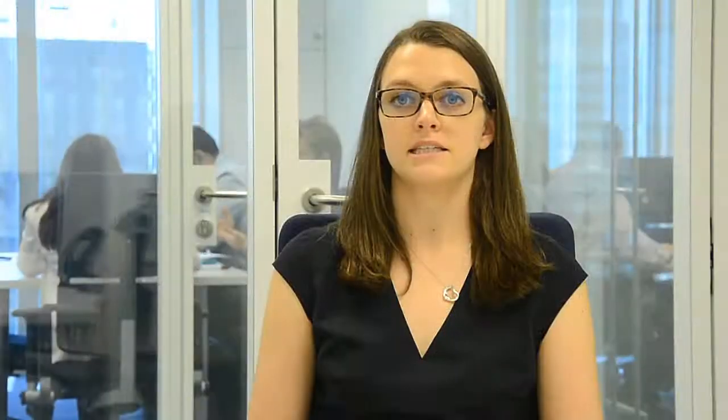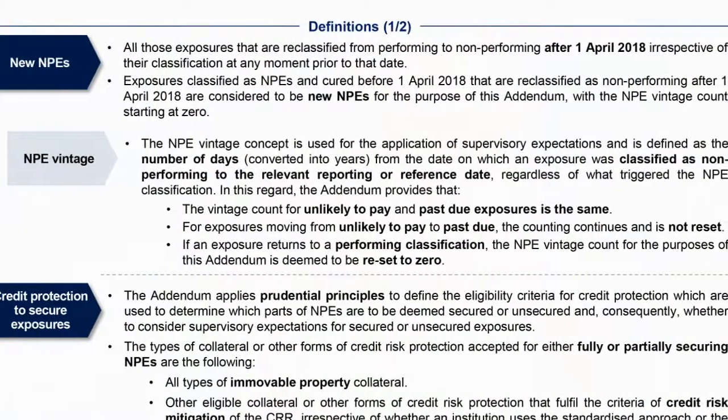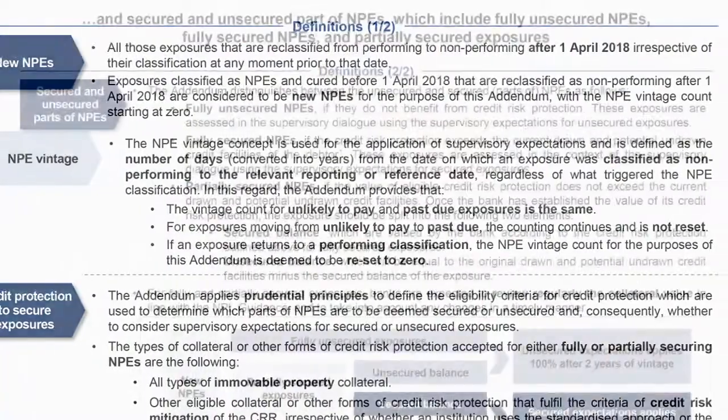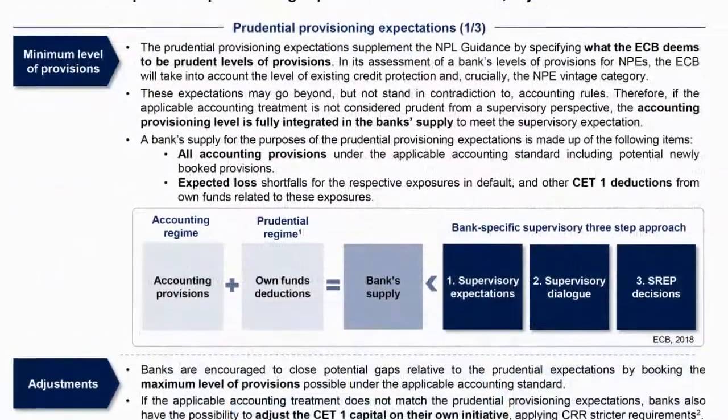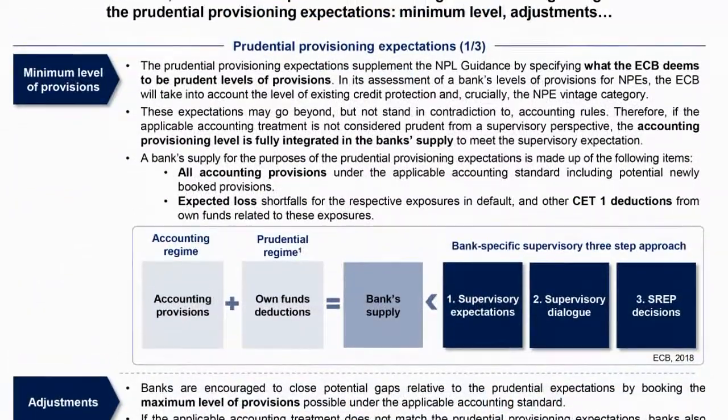Moreover, the addendum to the ECB guidance on NPLs sets out definitions to be considered, such as new NPEs or the eligible credit protection to secure exposures, and distinguishes between NPEs both before and after the 1st of April 2018. It also introduces prudential backstop requirements, where the establishment of a minimum level of provisions stands out.